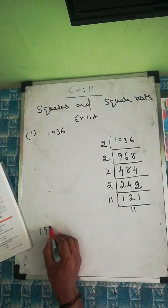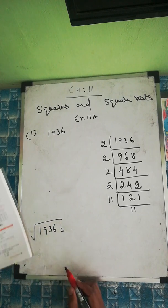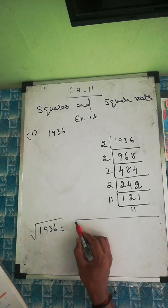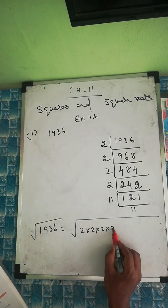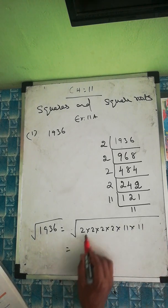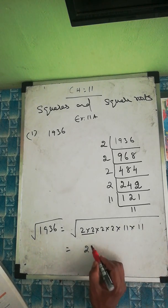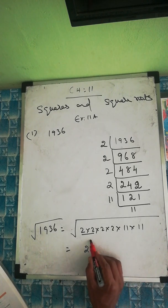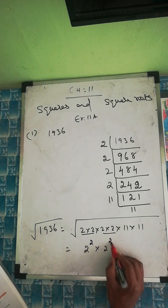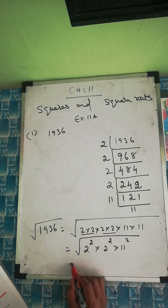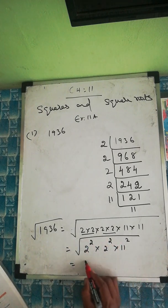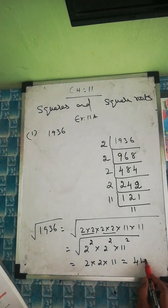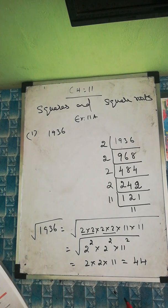So 1936 = 2 × 2 × 2 × 2 × 11 × 11. Taking the square root, we group in pairs: 2² × 2² × 11². Square root cancels the square, so we get 2 × 2 × 11 = 44. Therefore, 1936 is a perfect square number.